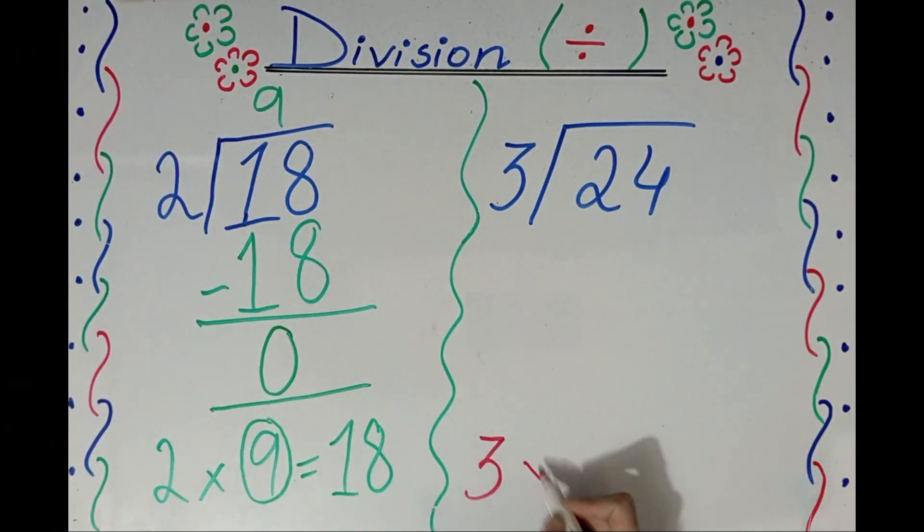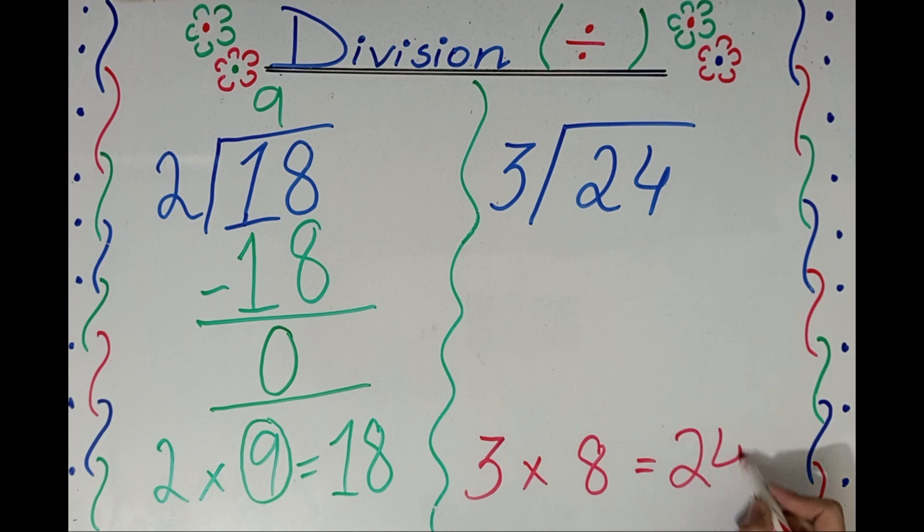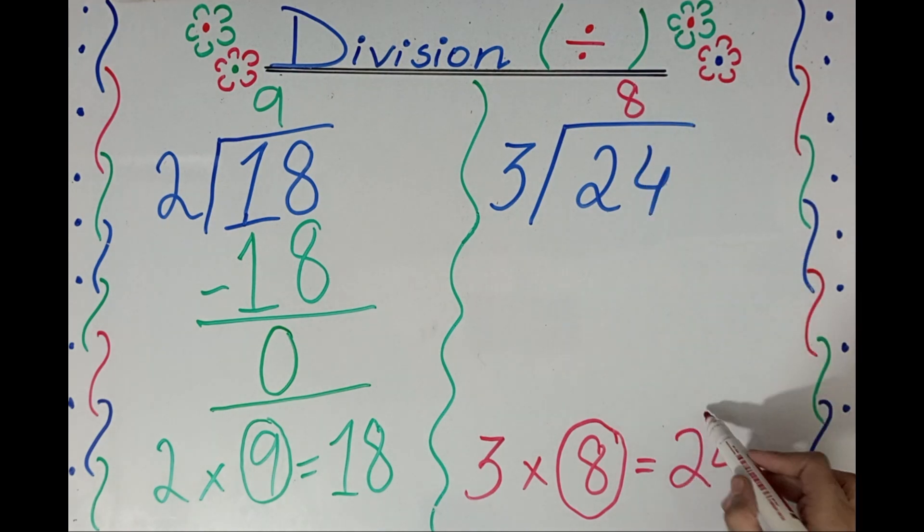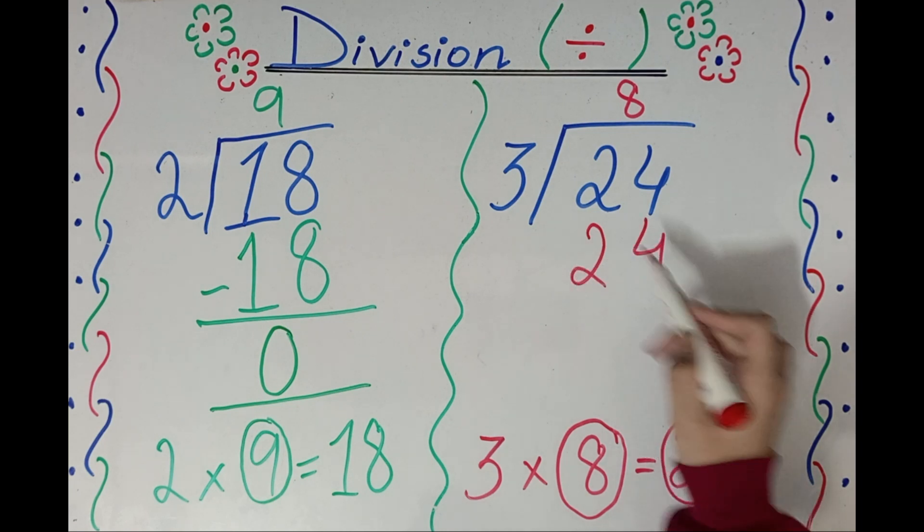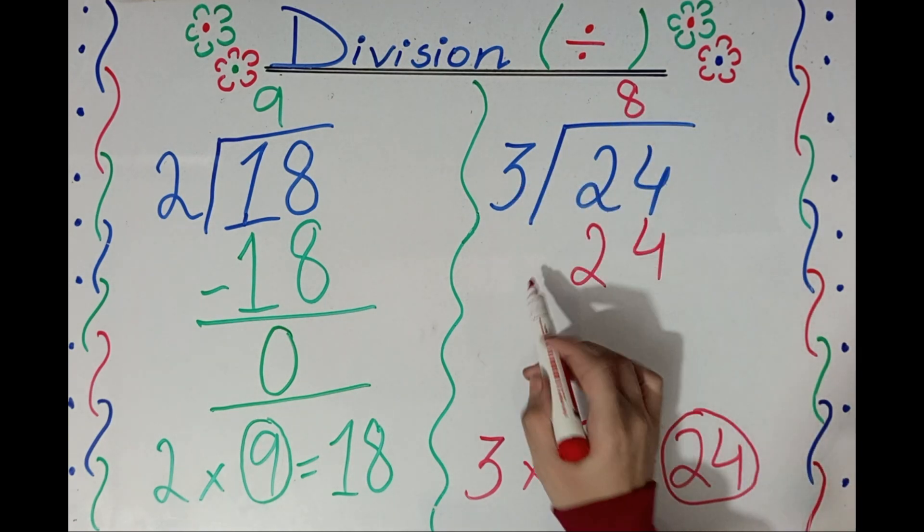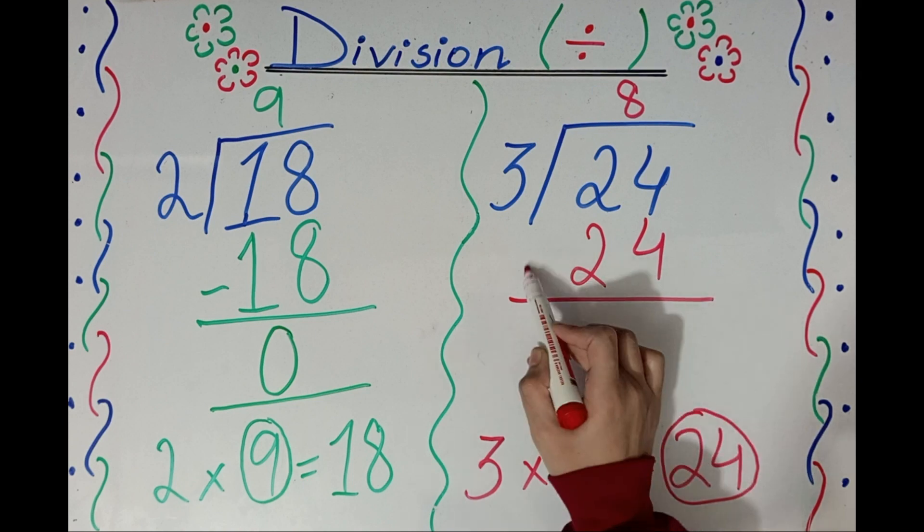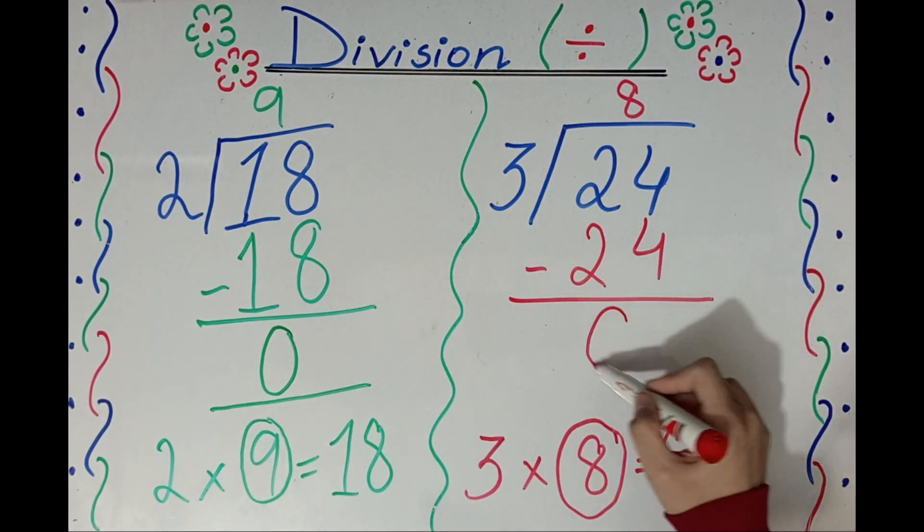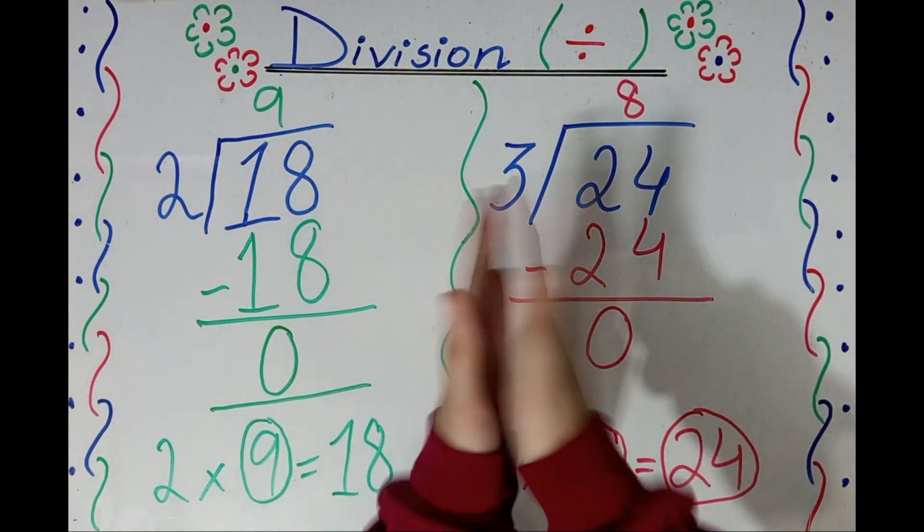3 multiply 8 equals 24. So we will write which rank above? Well done, we will write the central rank. And which rank below? The last rank. Well done. 3 eights are 24. Now what do we do? We will write minus. From 24 to 24 minus, what does that mean? Zero. Well done!